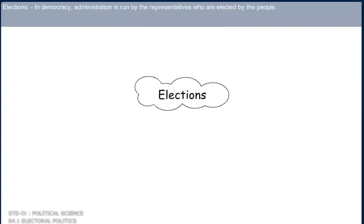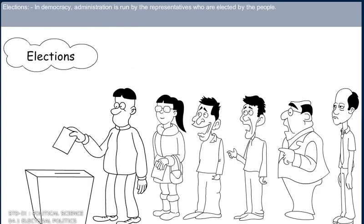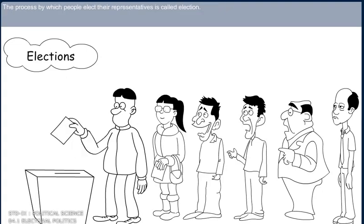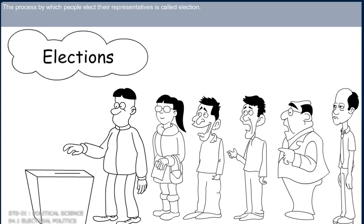Elections. In a democracy, administration is run by the representatives who are elected by the people. The process by which people elect their representatives is called an election.